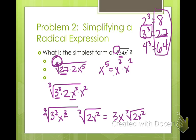We have to ask ourselves: do we need to use absolute values? Our root is 3, which is an odd number, so we can use positive or negative numbers. Can we have negatives in an odd-number root? Yes, so we don't need to use absolute values.